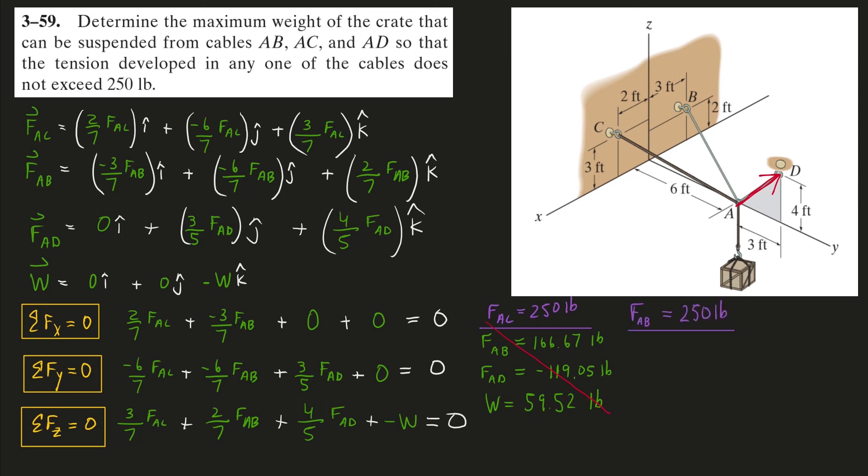Next, let's assume that the cable AB is operating at its max at 250. We'll plug that into force AB variable and solve for force AC, force AD, and the weight. If I do that, I'll get 375 and 893 for force AC and AD. These are way too big, way over our 250 pound limit. So this is also not what's going on.